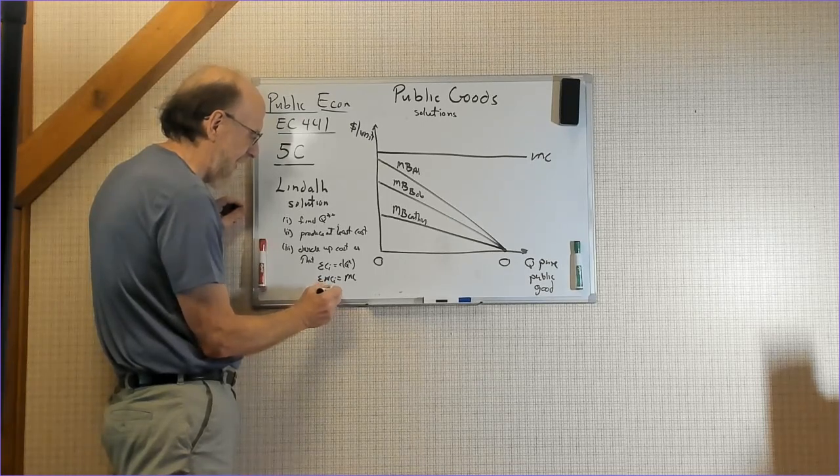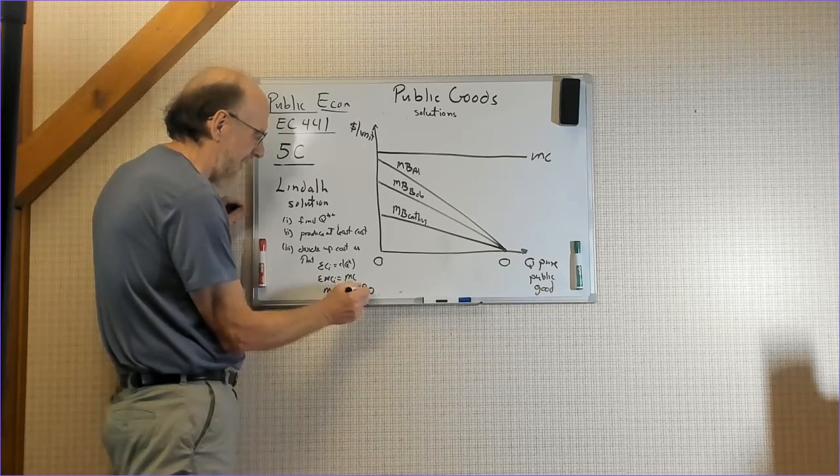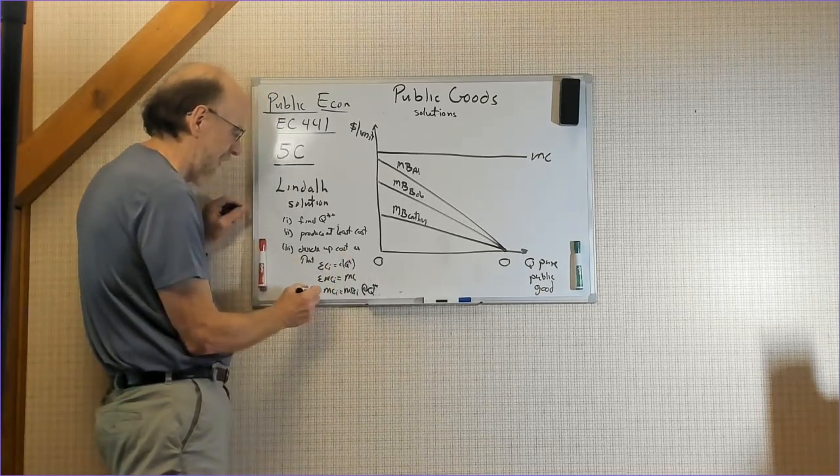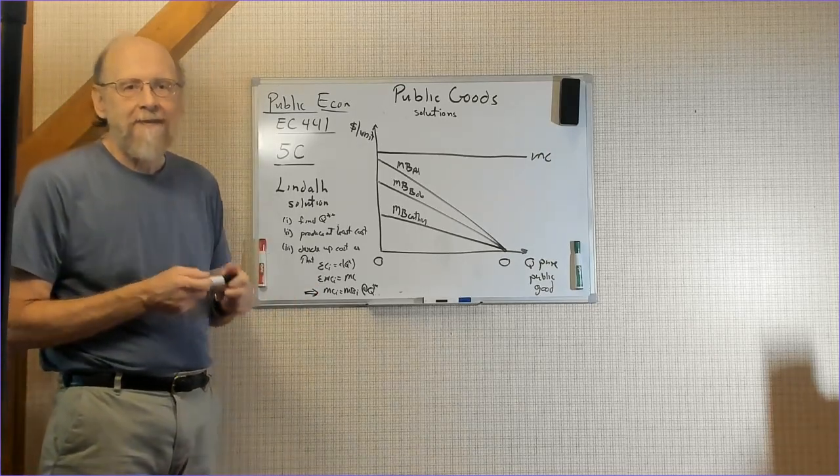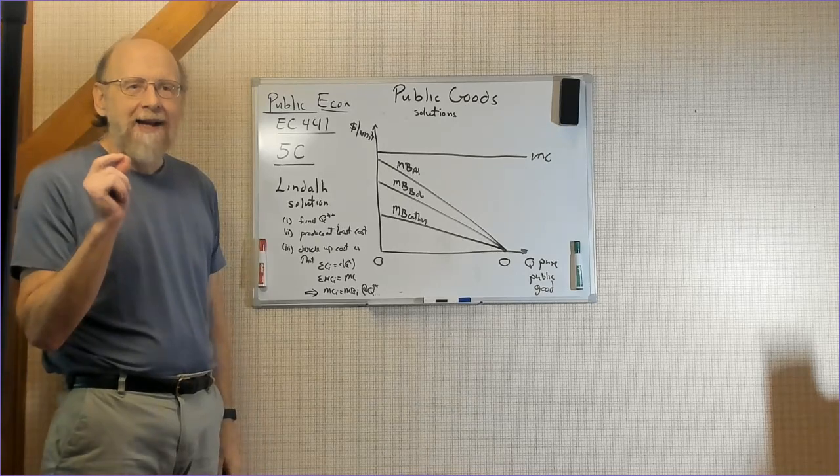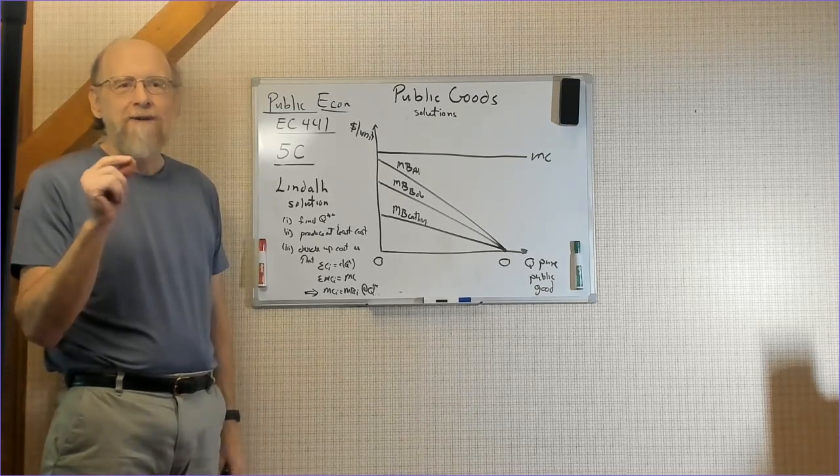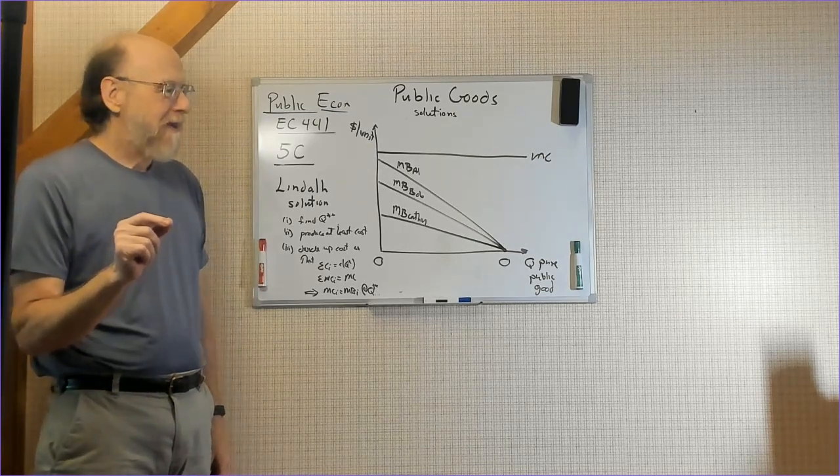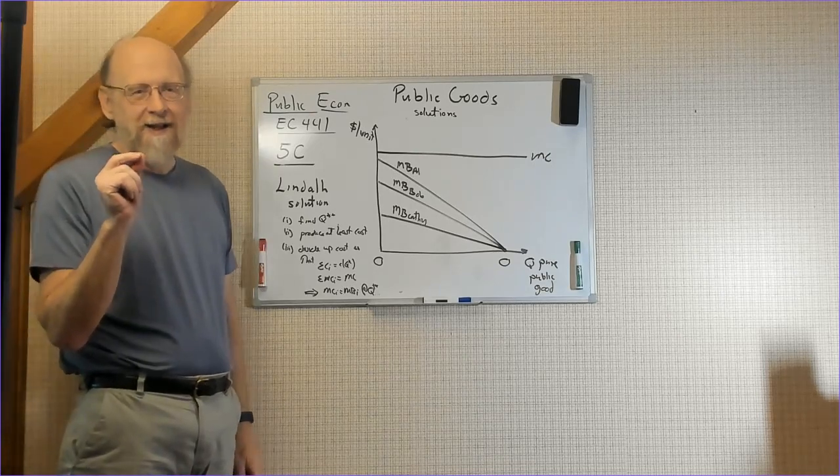And also, such that MC_i equals marginal benefit i at Q star star. So we have a new condition, namely that at the margin, each person should pay according to the marginal benefits they receive from the service.